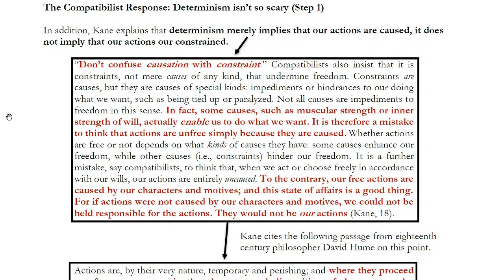Based on prior events, you might have excellent muscular strength — whether from your genetics or the work you put in at the gym or both. You have that muscular ability caused by previous events. Would you say: 'I have this excellent muscular strength and I know it was caused by previous events — I feel really constrained'? No — you would say, 'I feel powerful. I can lift heavy objects.' So the mere fact that your actions are the product of causation doesn't mean you're constrained — it might actually be liberating. Our free actions are caused by our characters and motives, and this state of affairs is a good thing. For if actions were not caused by our characters and motives, we could not be held responsible for them — they would not be our actions.